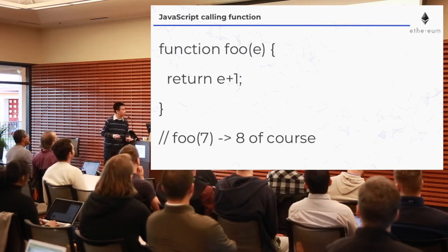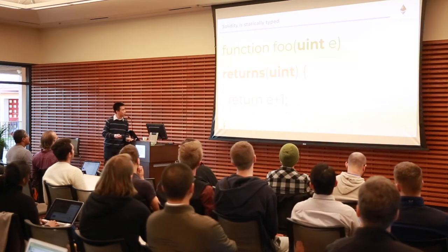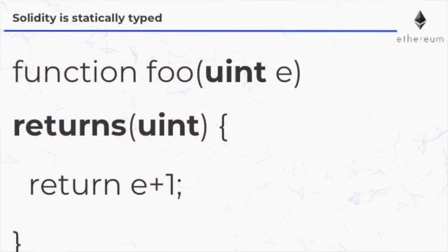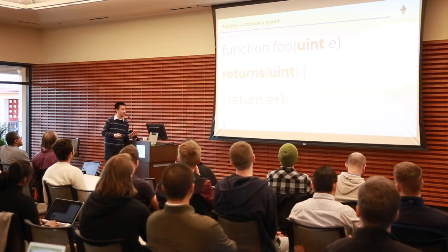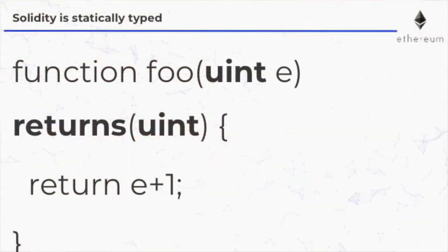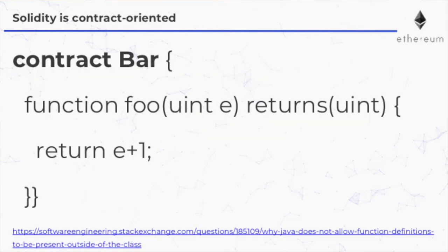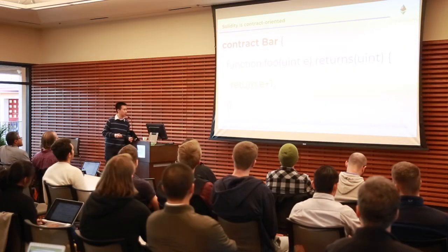How do we make that into Solidity? Solidity is statically typed, so you add types — the input to foo is now an unsigned integer (uint), and you're also declaring that it returns an unsigned integer. And to wrap things up, functions must belong inside a contract — a bit like how in Java all methods are inside some kind of class. This is already a smart contract you can put in Remix and run.